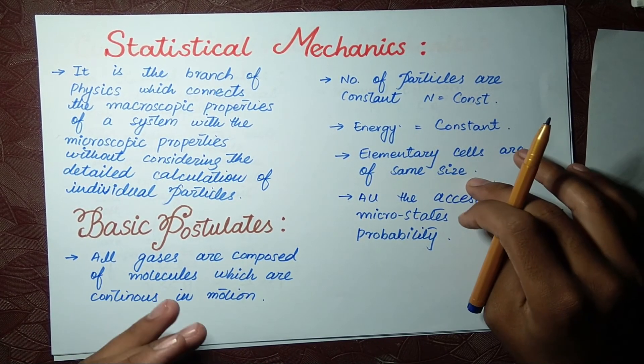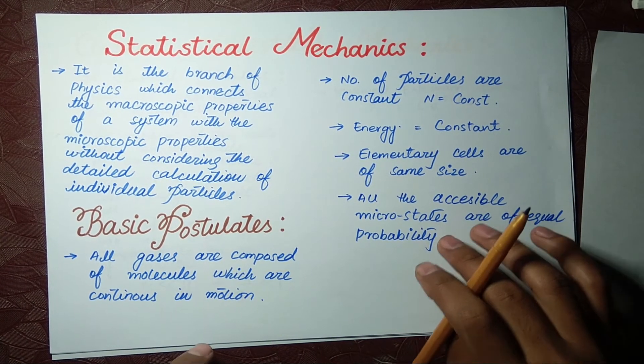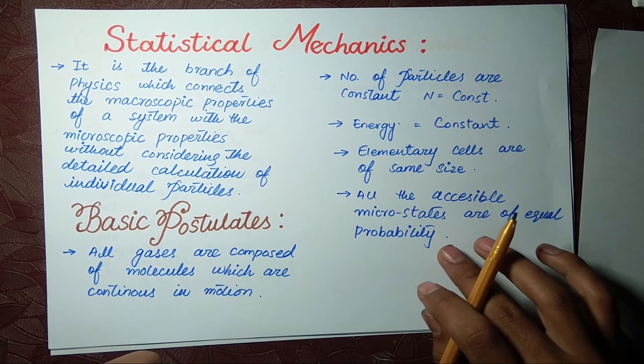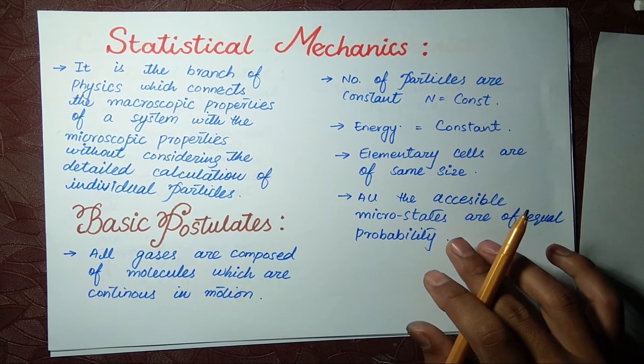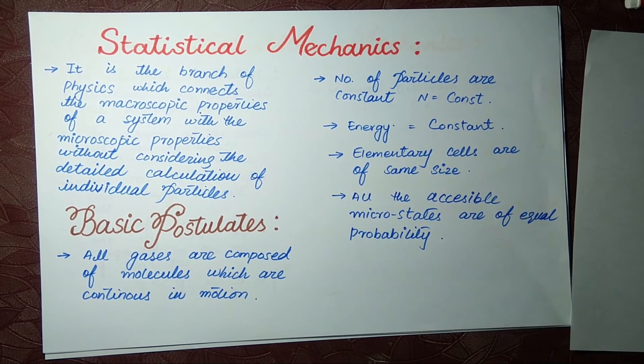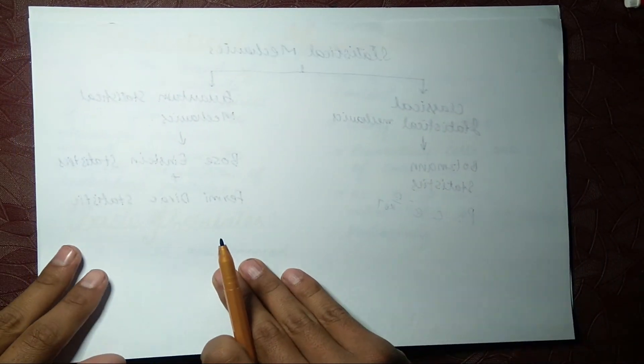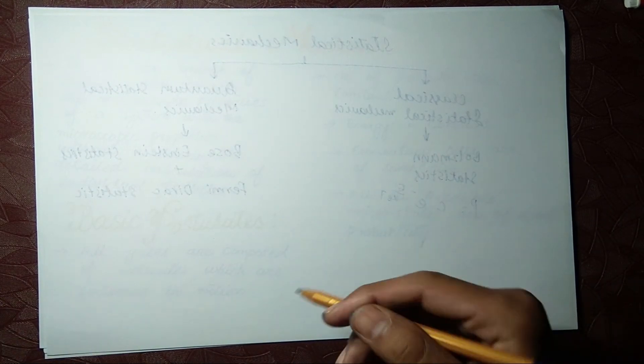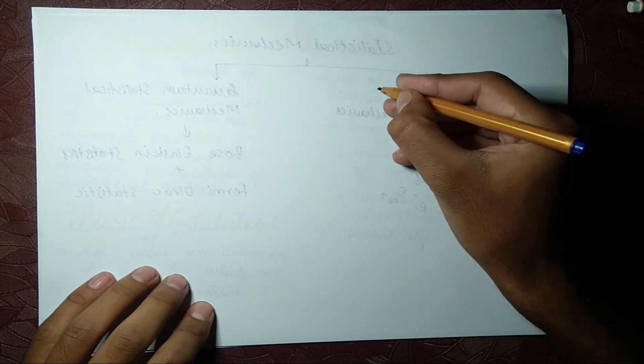This is the tricky one, so I'm moving on toward this point: all the accessible micro states are of equal probability. What is a micro state? So let's try to understand this from an example. We say that we have a big state or a macro state. I'm rolling a dice and it gets me six. I got six.